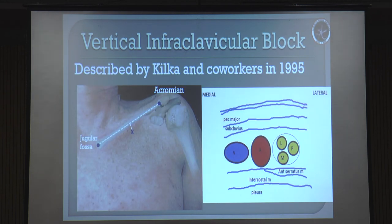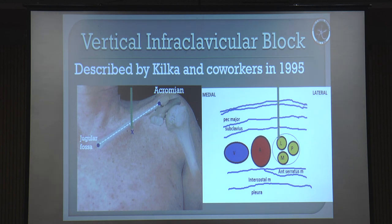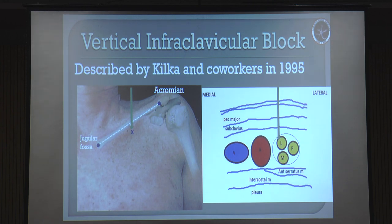Now coming to the VIB. It was described by Kilka. It is nothing but the injection in an anterior-posterior direction, just below the clavicle, at the midpoint between the jugular fossa and the acromion process. Your needle goes perpendicular in an anterior-posterior direction, and you block at a place where I described the posterior-perpendicular approach yesterday. The advantage is the anatomical arrangement is constant. The first response you will get, if you are at the right midpoint, will be the lateral cord response, which is the most superficial.